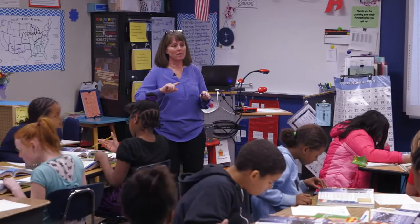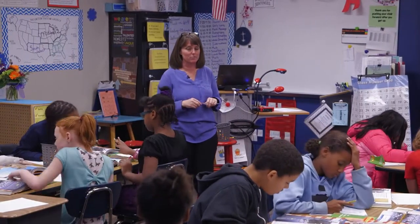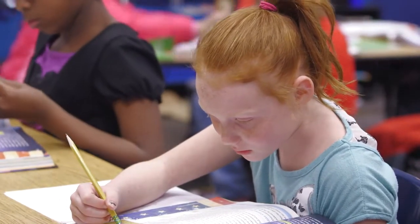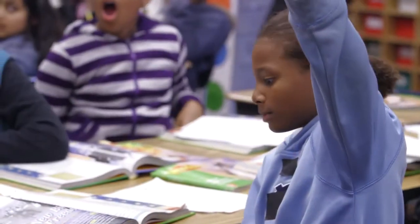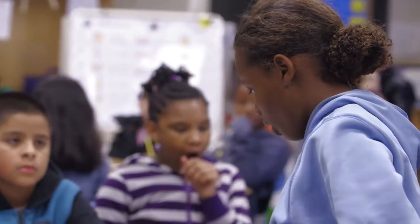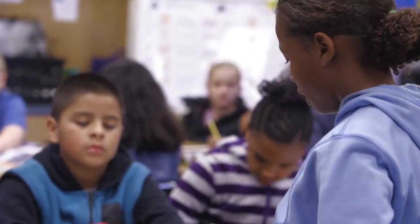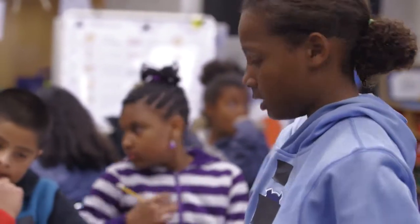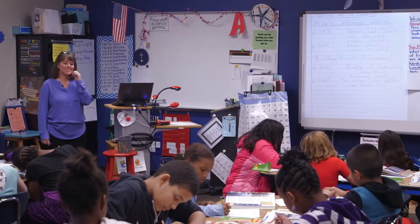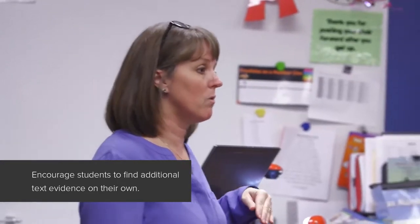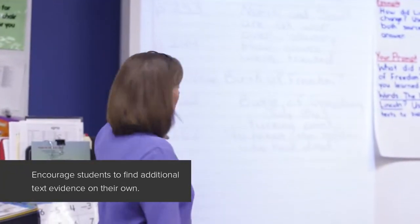Start finding your text evidence. If you find it, share with someone at your table, and I'll give you about two or three minutes and then we'll share. Raise your hand if you can give me evidence. Zai, what else did we learn from A New Birth of Freedom? He said to honor the soldiers who had died. And what page did you read that on? 262. Okay, I totally agree. If there's something else you want to add as your text evidence, please do so. If you don't want to add one of these two things, then add something different.